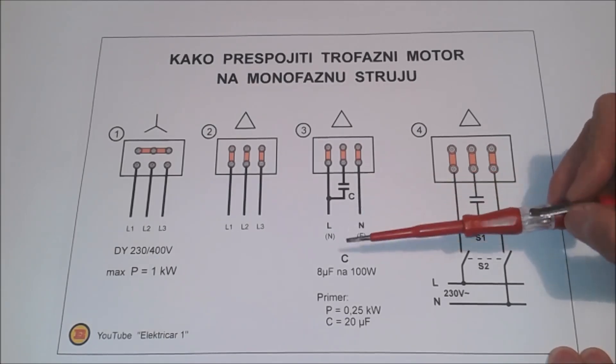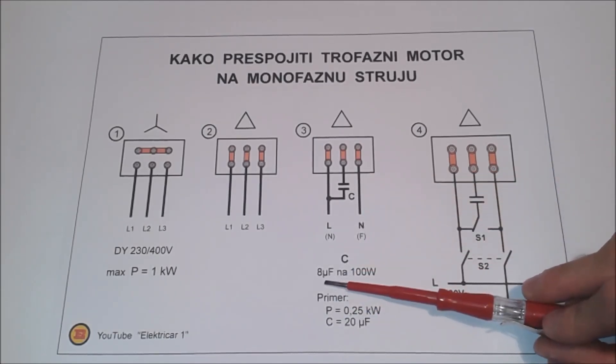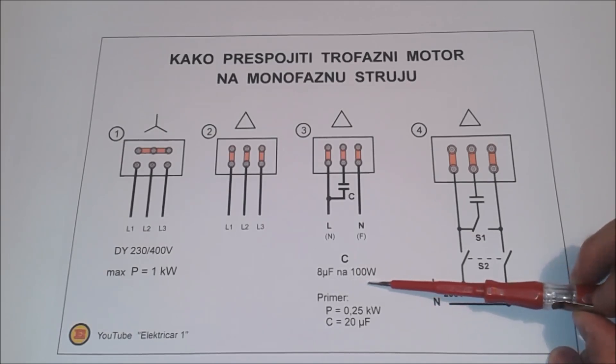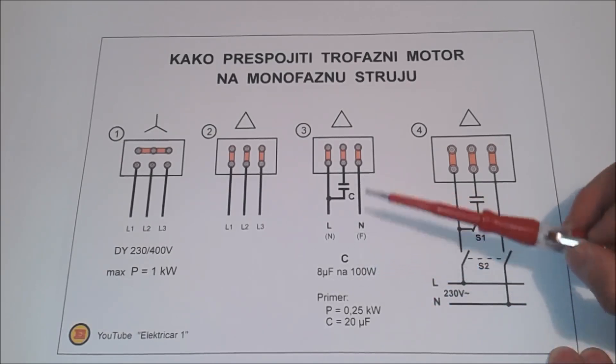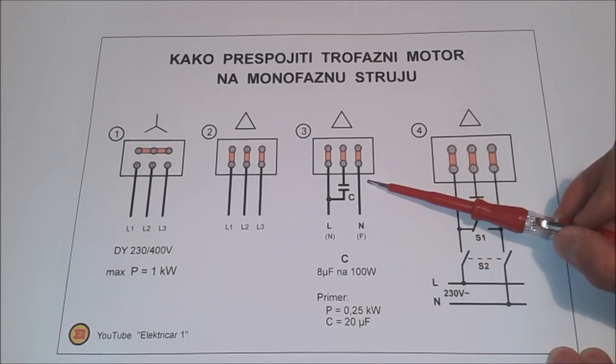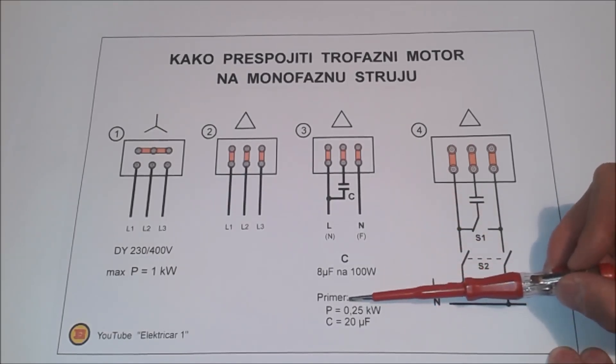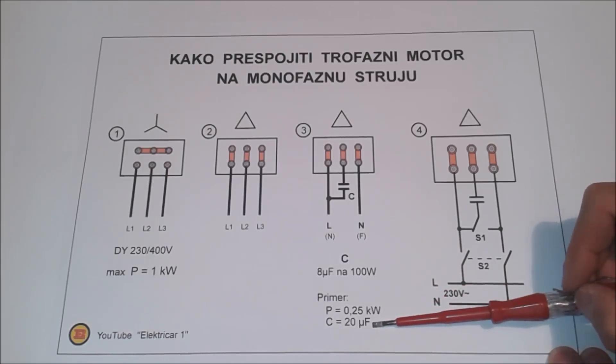The capacitance of the capacitor should be chosen so that we have eight microfarads for every hundred watts of power of our former three-phase electric motor. For example, for a 0.25kW motor, the corresponding capacitor is 20 microfarads.